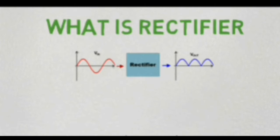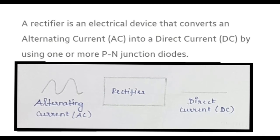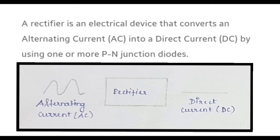How do we use the rectifier? In this video, we will look at the types of rectifiers. We use rectifiers in electrical systems, in all appliances that run on AC, in electronic circuits, and in DC operation. We use DC voltage and DC current.